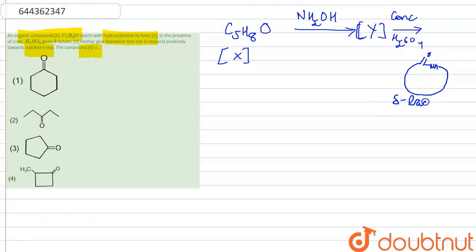It neither gives Benedict test nor it responds towards haloform test. It does not give Benedict test. Benedict test is used for finding out ketones that are freely present in the given compound. So if it does not give Benedict test, it means that there is no free CO group present, right? Free CO or CHO group is present.